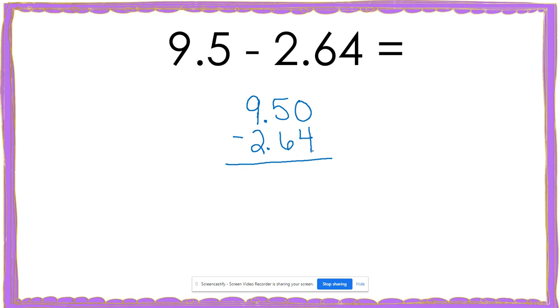I know that I cannot take four away from zero. So I'm going to borrow from the five and make that into a four. When I do that, this becomes a 10. 10 minus four gives me six.